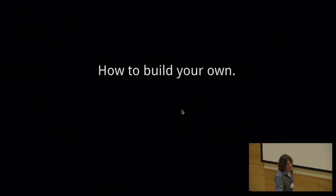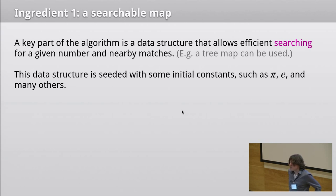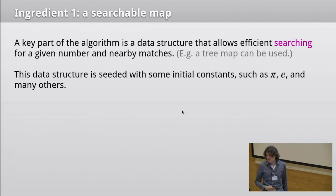How does it work? Essentially there are three key ingredients to this calculator. One is you need a data structure that allows you to efficiently search through a space of numbers. In this prototype I've used a tree map, which means that you can search through a tree, which gives you a very efficient lookup, but you can also go back up in the tree and sort of search things that are nearby. This gives you this nifty little table at the end, which shows you the neighborhood of what's around. And this data structure is then seeded with constants such as e and pi, a bunch of integers and other interesting numbers.